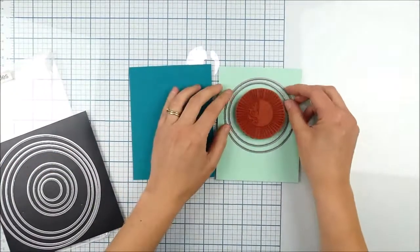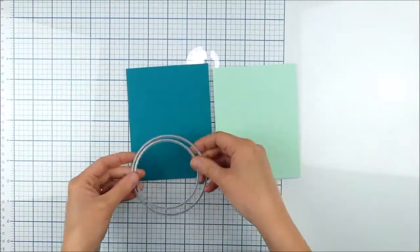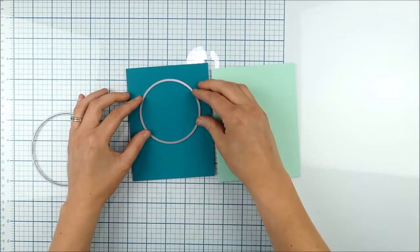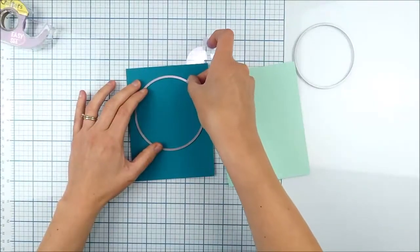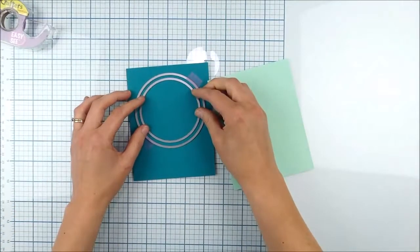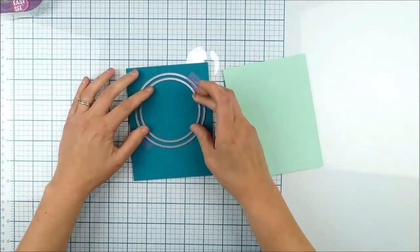So I picked two different sizes of circle dies. I played with different ones to pick what I liked and I'm going to go ahead and stack them on my card together. I'm going to center the larger one on there first, hold it in place with a little bit of tape and then do the same thing for the center.